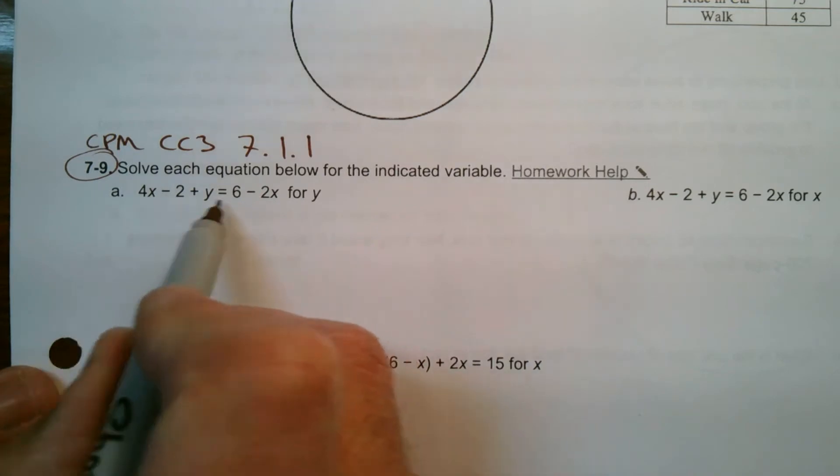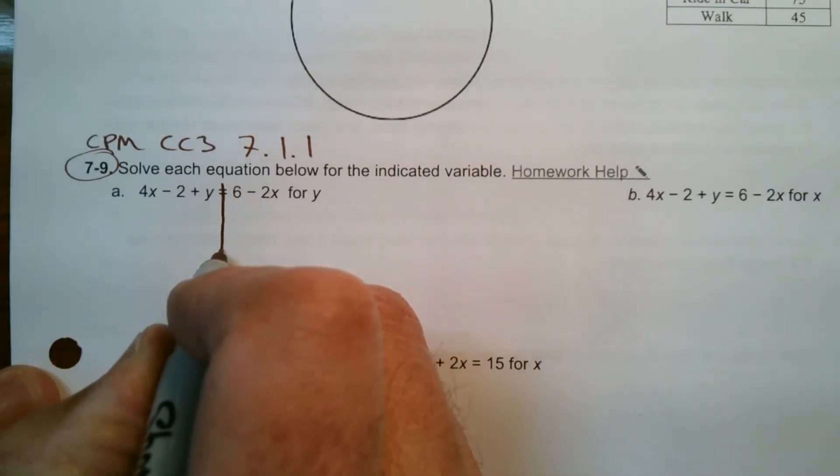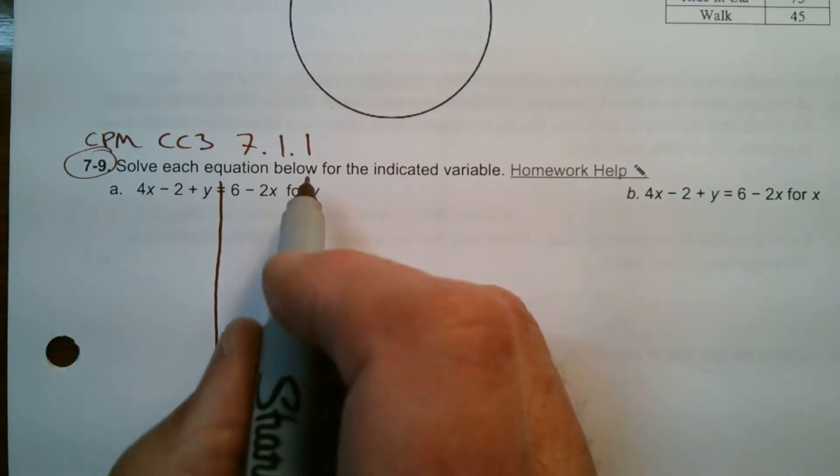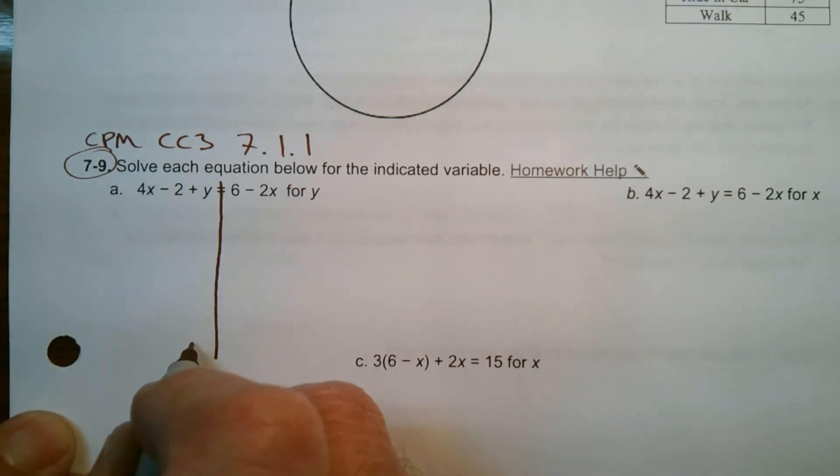So in this case, here's my equation. I like to put my equation wall so I know I'm dealing with my two sides and doing things accordingly. And it wants me to solve for y. That ultimately means at the very end I want my y all by itself.